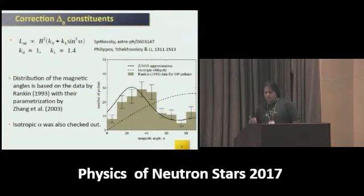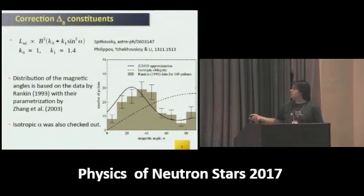To calculate this distribution, we need initial distributions. First, the distribution for magnetic angles. There are many methods to reconstruct this. We adopted data from Rankin and parametrization by Zhang. We also checked the more conservative assumption about isotropic obliquities. As you'll see, the particular choice of magnetic angle distribution affects the final distribution of delta B weakly, which is what we expect since pulsar spin-down luminosity depends weakly on magnetic obliquity.